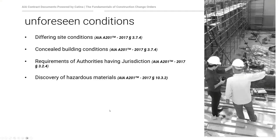Next, the more common reasons for a change order are unforeseen conditions. The first and most common is differing site or concealed conditions — unknown subsurface conditions, hitting rock, unsuitable soil. AIA A201, paragraph 3.7.4, delineates in detail how this should be handled. Mold is another example on existing buildings, as are hidden pipes exposed when opening walls. These are all legitimate change order requests by a contractor.